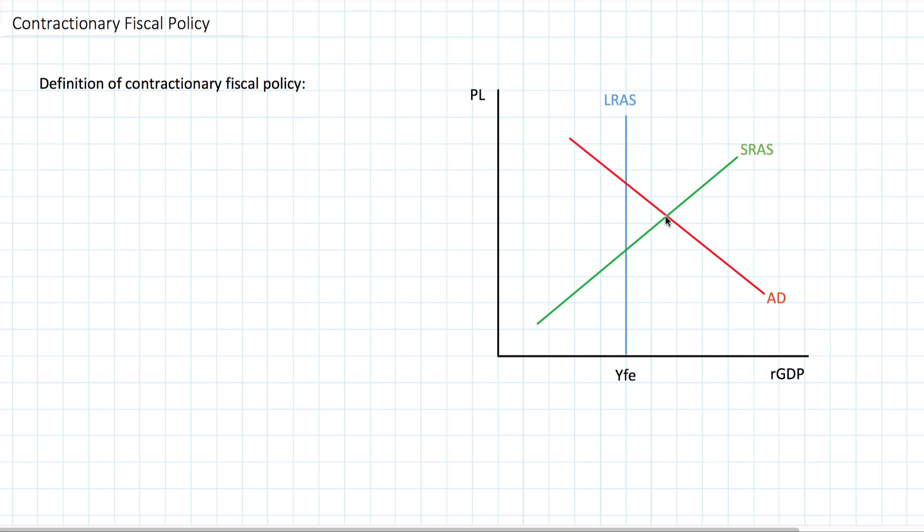But now we're looking at a situation in which a country has an inflationary gap. Output is beyond full employment. This economy is overheating, you could say, and it has inflation that's higher than desirable. Its price level, PL1, is greater than the full employment price level of PLFE. This country is overheating. What it needs is contractionary fiscal policy.